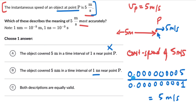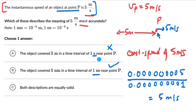When talking about instantaneous speed, we need to look at the distance covered in a very, very small time interval around point P to get an accurate picture. The smaller the time interval, the more accurate our description. And since 1 nanosecond is a smaller time interval than 1 second, this option is more accurate than the first option.